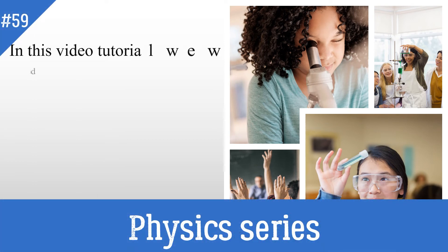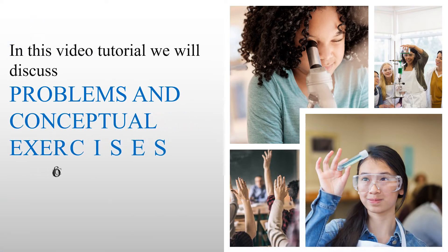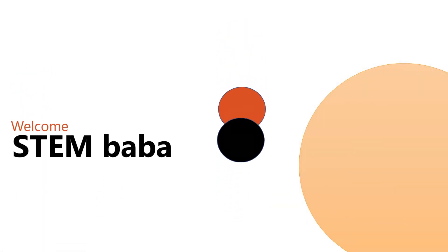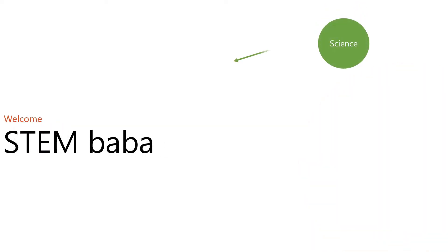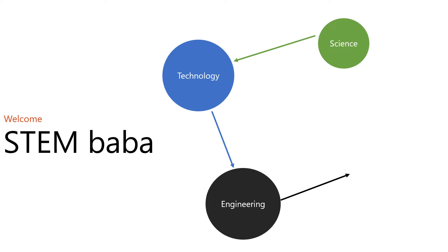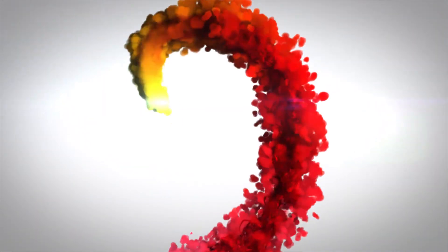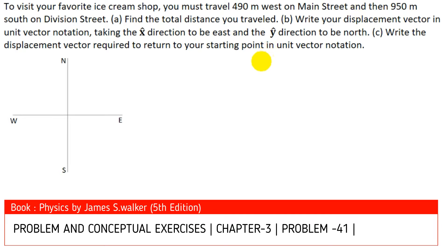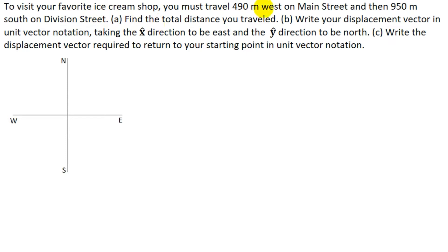In this video, we'll discuss problems and conceptual exercises of Chapter 3 from the book by James Walker. This question seems large but it's pretty simple. It says to visit your favorite ice cream shop, you must travel 490 meters due West and then 950 meters due South. I'll draw this vector, taking East as positive and North as positive, so West and South will be negative.